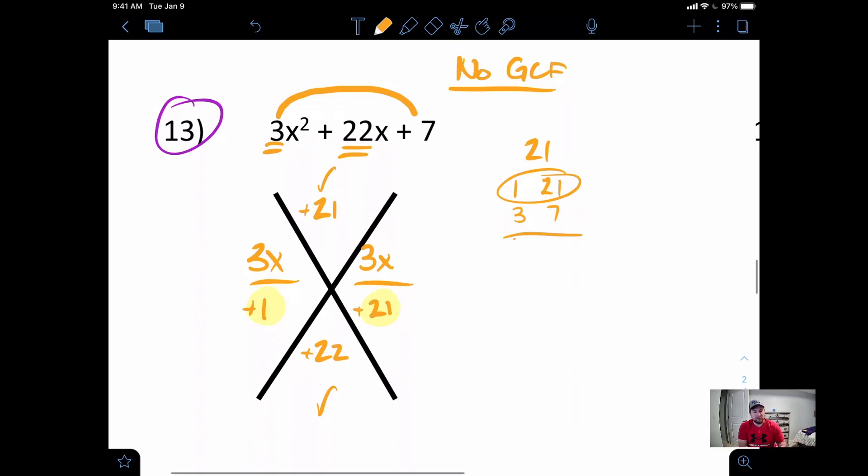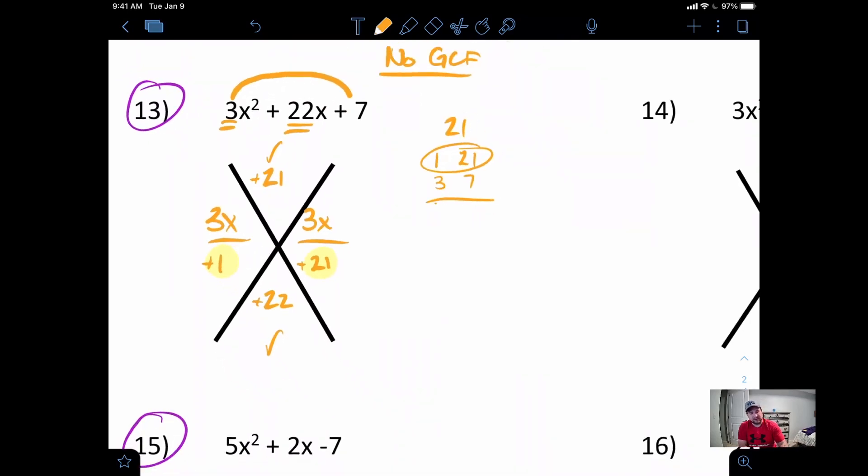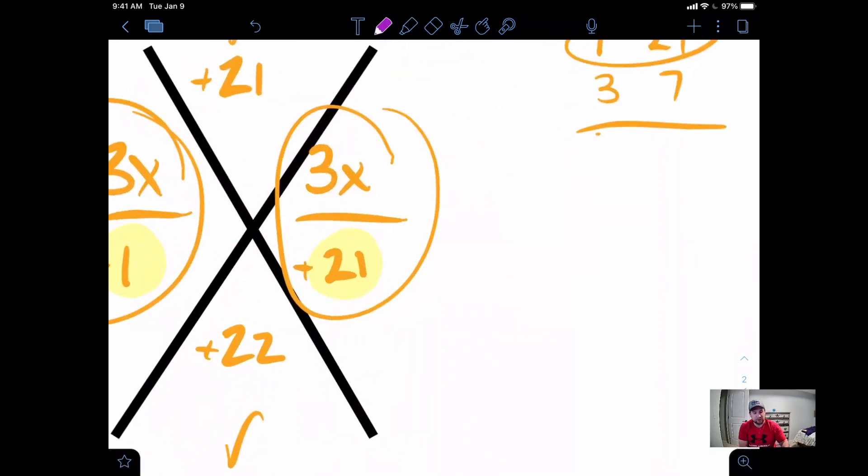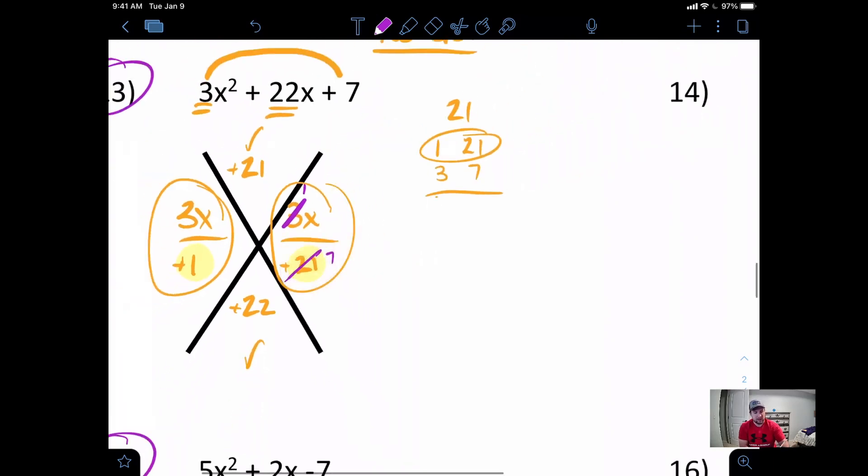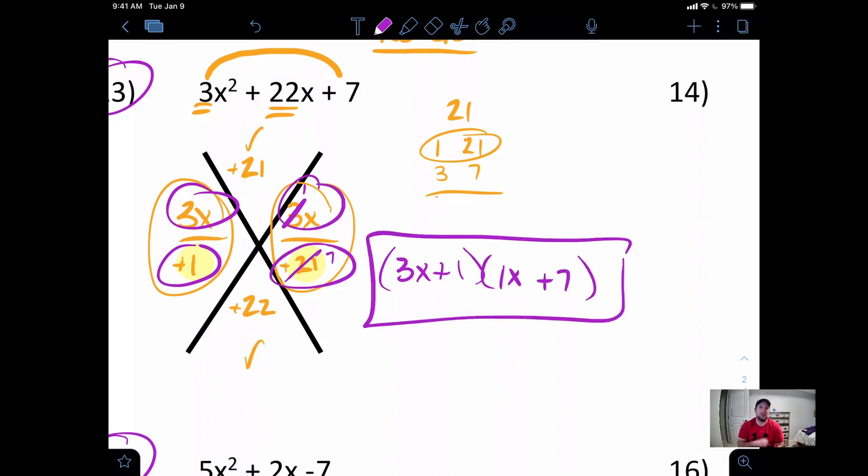Now, as we move on with this, so my final answer here, right, I always look to see if I can reduce. I can't reduce anything there. But over here, I can. 3 goes into both of those two numbers. So 3 goes into 3, 1 times. So I'm going to make that into a 1X. And 3 goes into 21, 7 times. So it's going to be a plus 7 on the bottom. So my final answer will be 3X plus 1 and 1X plus 7, which will make this our final answer.